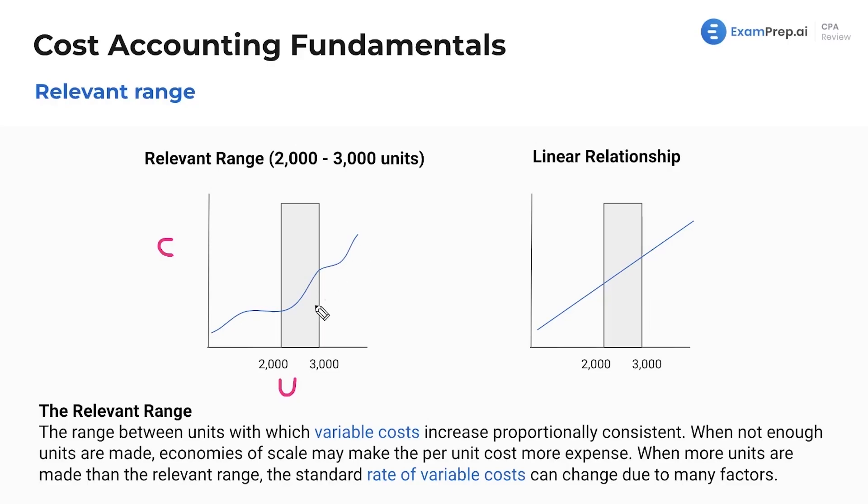Again, it's just because the question will say, so-and-so over the relevant range increases. Like, how should it act? And it would be proportional. Whereas a linear relationship right here, costs just increase linearly as we go up.